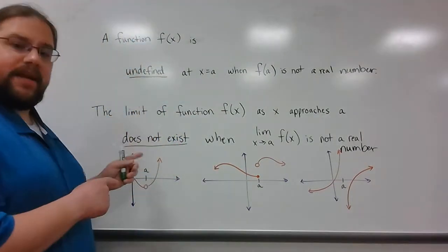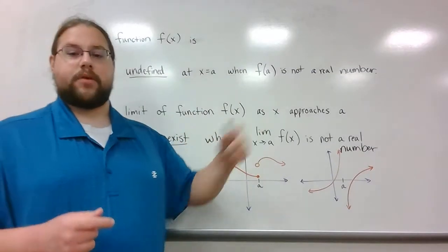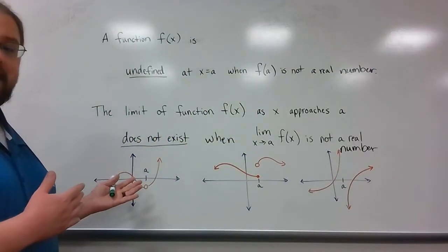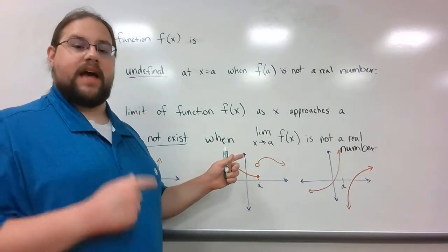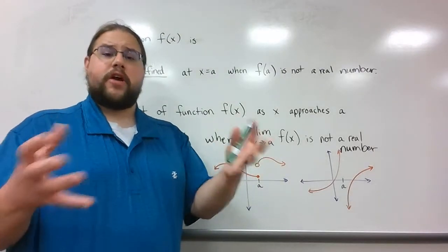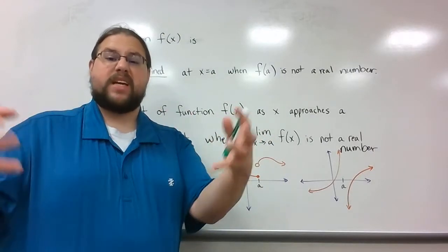On the other hand, the limit of a function f(x) as x approaches a does not exist when lim(x→a) f(x) is not a real number. Notice they both have to do with the fact that something's not a real number.